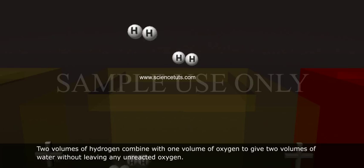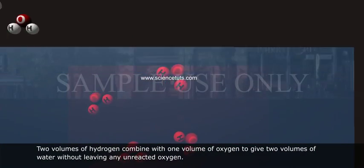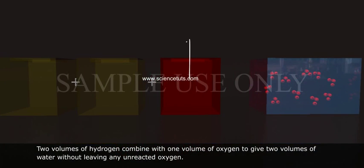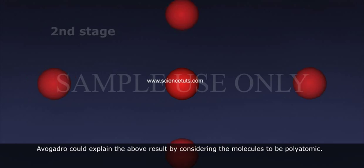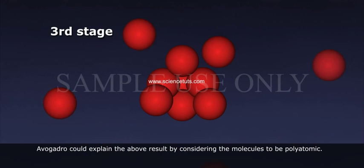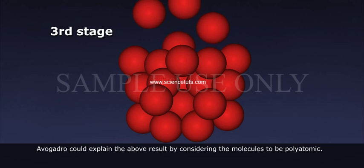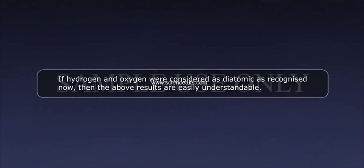Two volumes of hydrogen combine with one volume of oxygen to give two volumes of water without leaving any unreacted oxygen. Avogadro could explain the above result by considering the molecules to be polyatomic. If hydrogen and oxygen were considered as diatomic, as recognized now, then the above results are easily understandable.